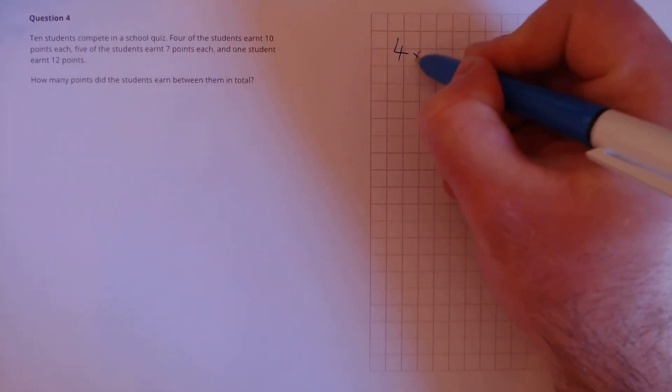Question 4. 10 students compete in a school quiz. 4 of the students earn 10 points each. 5 of the students earn 7 points each. And 1 student earn 12 points. How many points did the students earn in total?